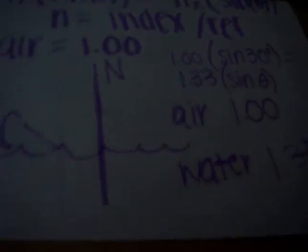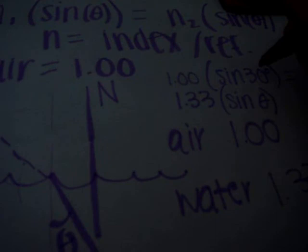And then times sine of theta. You don't know theta, because we're going to be solving for the angle of refraction that's formed. So the first step you're going to do is find the sine of 30 degrees, which is 0.5. So 1 times 0.5 is going to be 0.5.